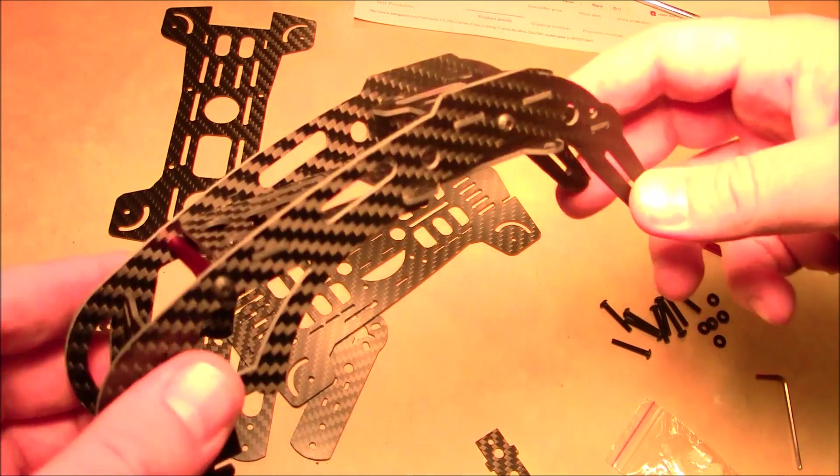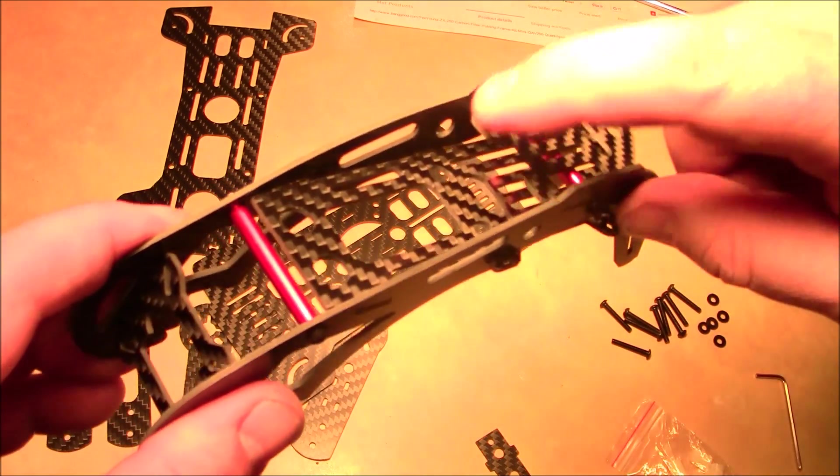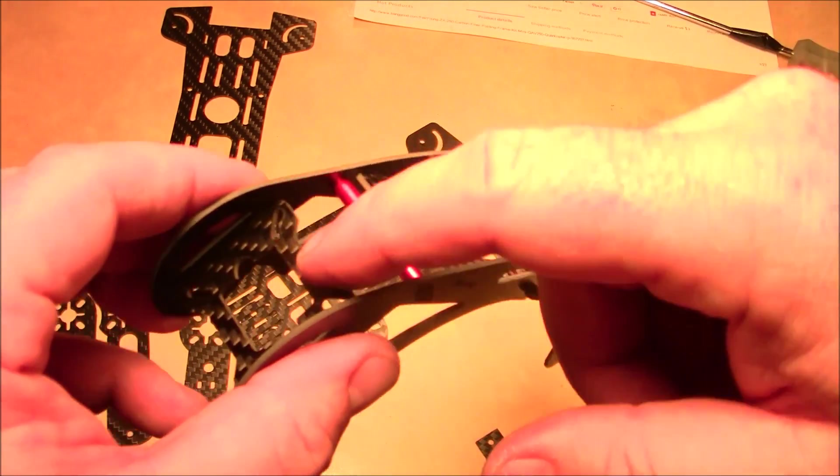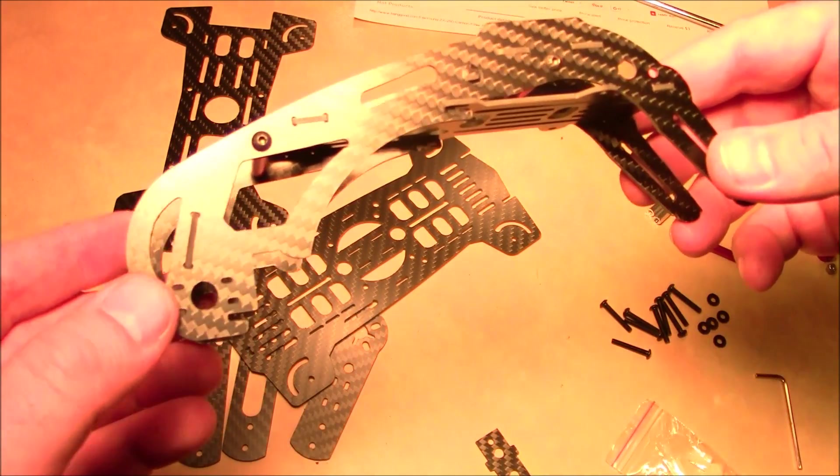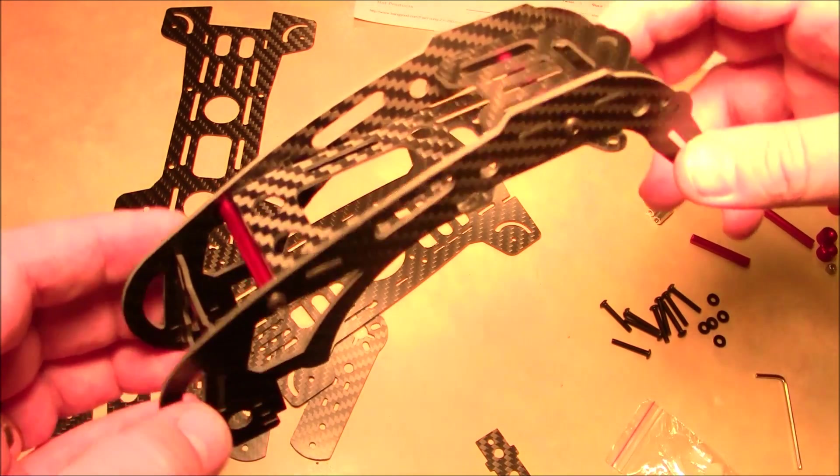So here's the top part of the quad assembled. It has the camera mount up here and the larger plate here. The front FPV camera mount is tilted back just a little bit, so that'll be better for FPV racing.